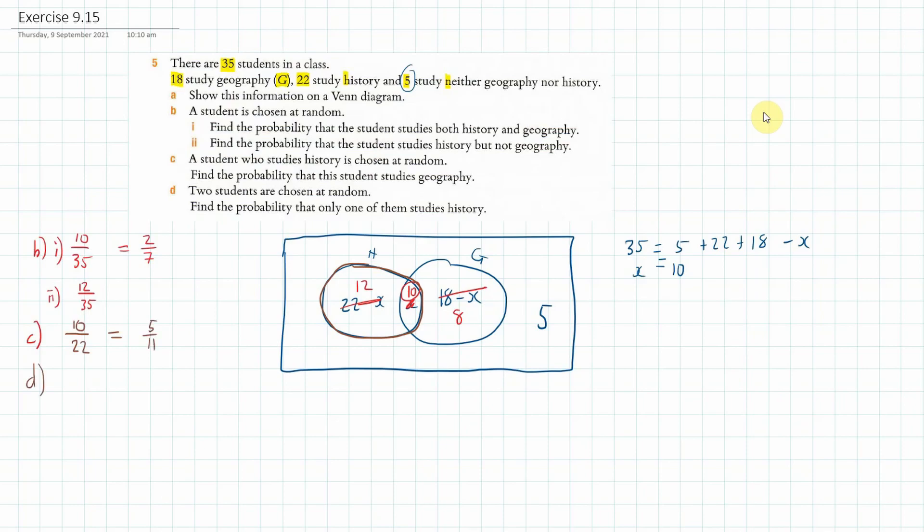And D, two students are chosen at random. Find the probability that only one of them studies History. Now I'm assuming we're taking this from the whole class.